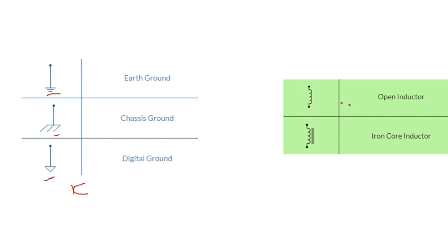This symbol is for an open inductor — this is the normal symbol for an inductor. But this symbol specifically is for an open inductor. And this symbol with two lines means an iron core inductor.